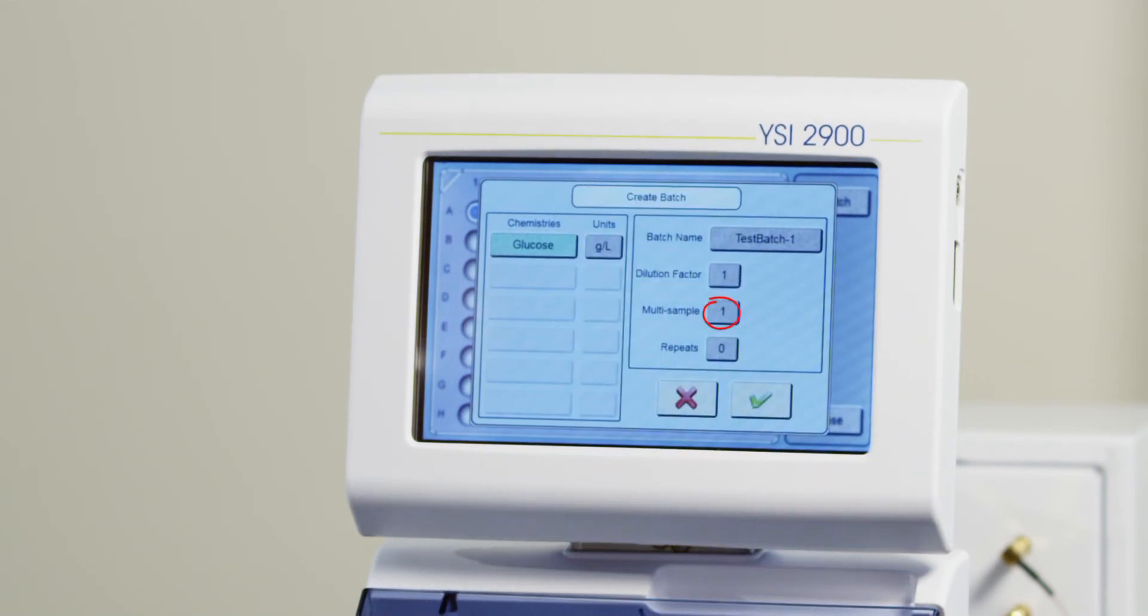The Multi-Sample option allows multiples of each sample to be run. For example, if the Multi-Sample is 2, each sample will be sampled and run twice in a row. If the Repeat button is set to 1, the entire batch will be repeated.